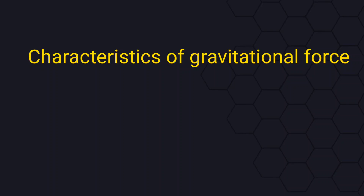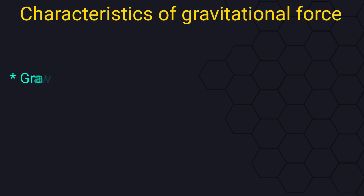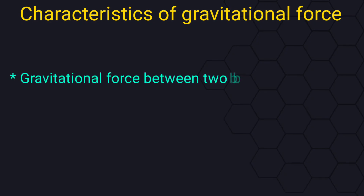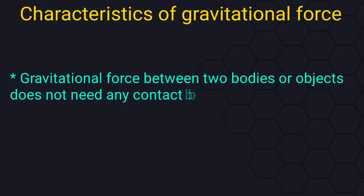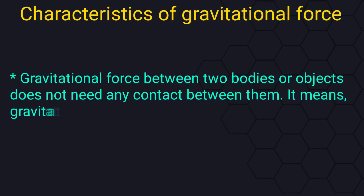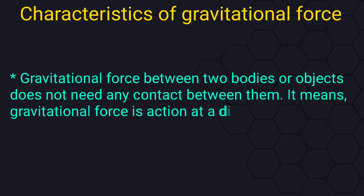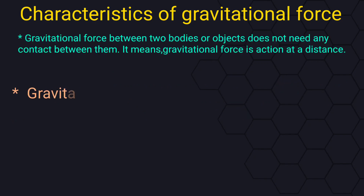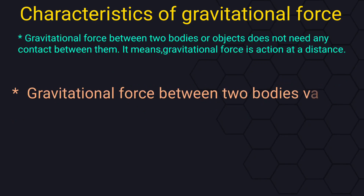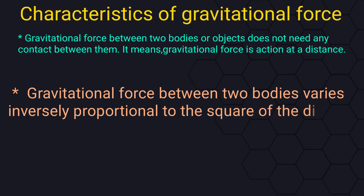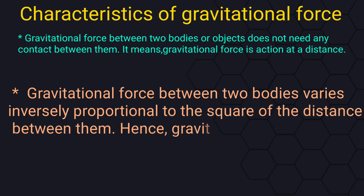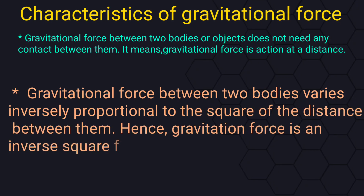Hello friends, welcome to my channel. In this video we discuss characteristics of gravitational force. Gravitational force between two bodies does not need any contact between them — it means gravitational force is action at a distance. Gravitational force between two bodies varies inversely proportional to the square of distance between them, hence gravitational force is an inverse square force.